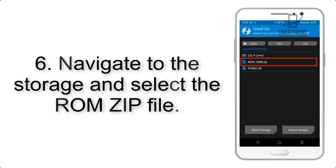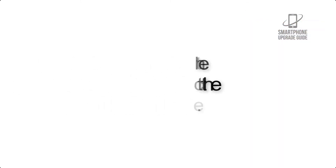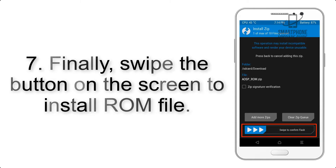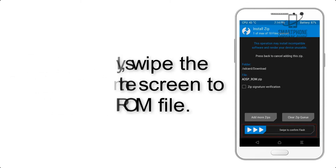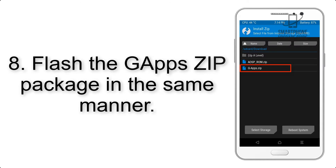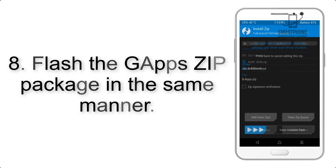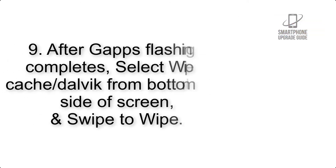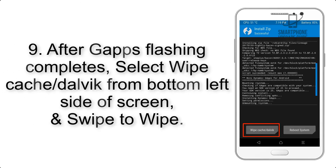Step 5: Go back to the recovery main screen and tap on the Install button. Step 6: Navigate to the storage and select the ROM zip file. Step 7: Swipe the button on the screen to install the ROM file. Step 8: Flash the GApps zip package in the same manner.